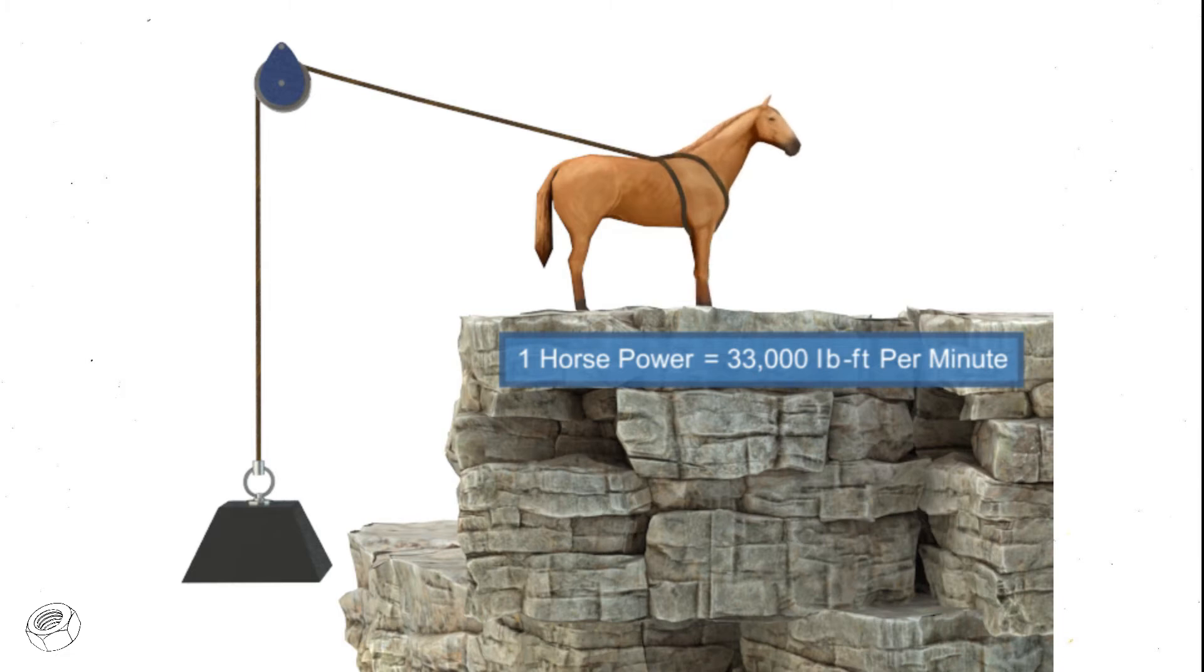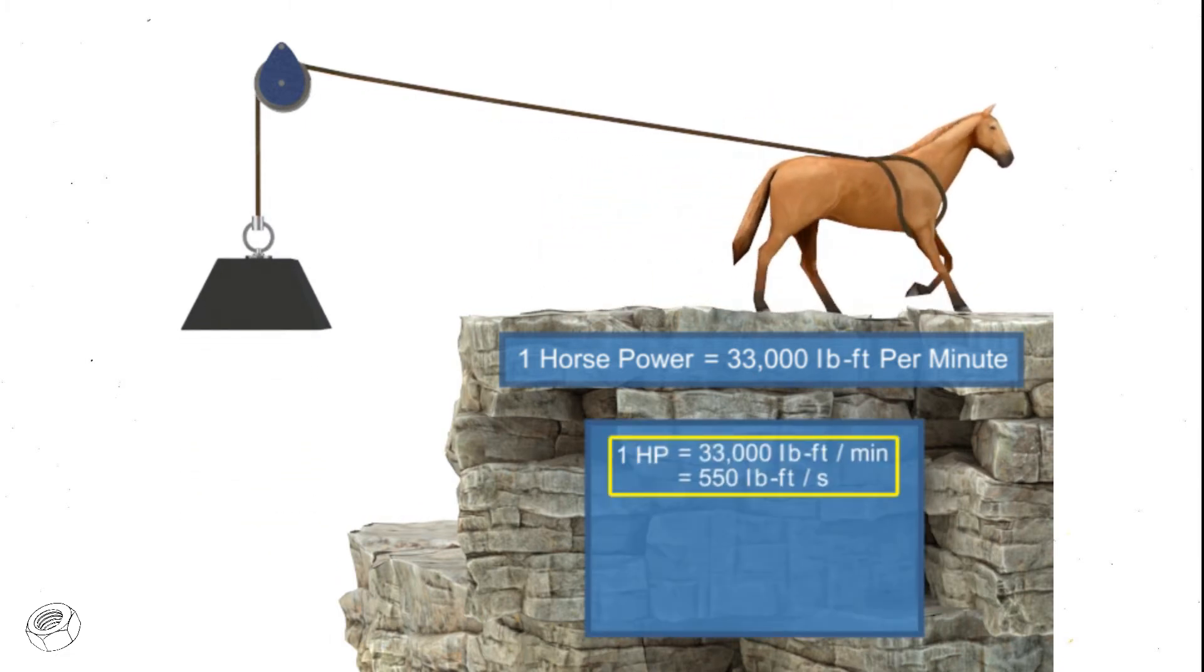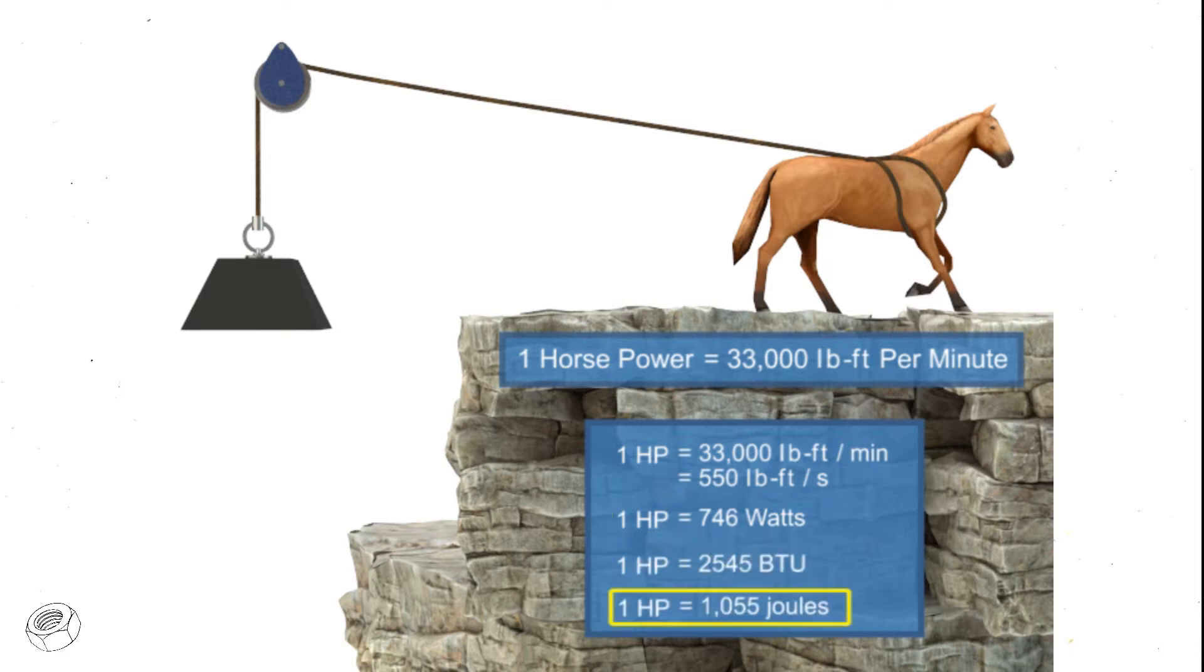In modern terms, horsepower is simply another unit of measurement for power, and can be translated into watts, BTUs, joules, or any unit of power. Units that measure motor power are typically in horsepower or watts.